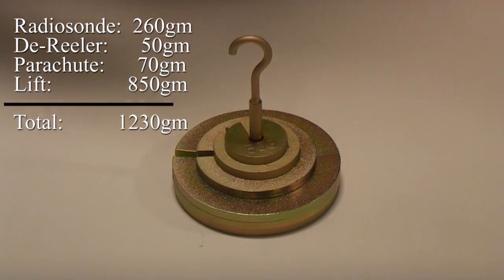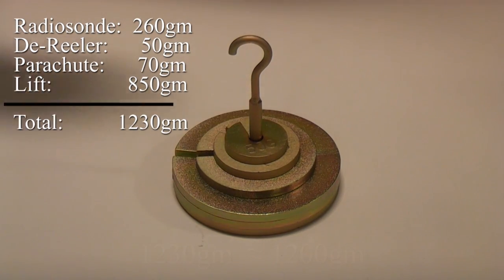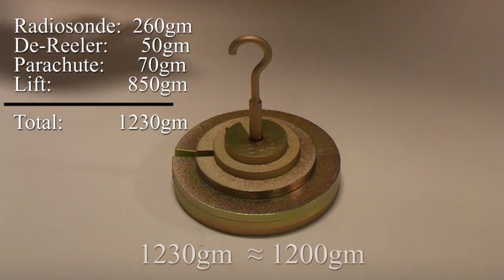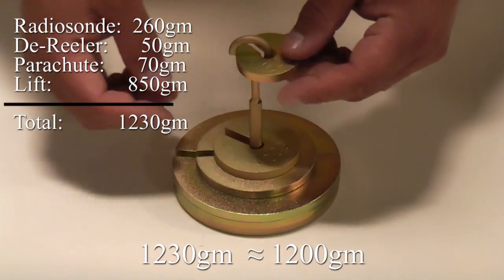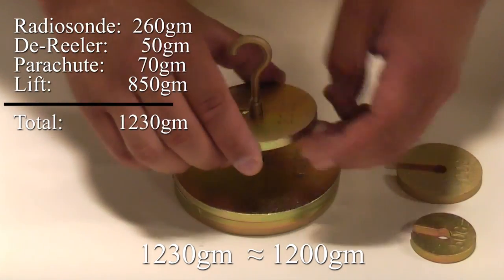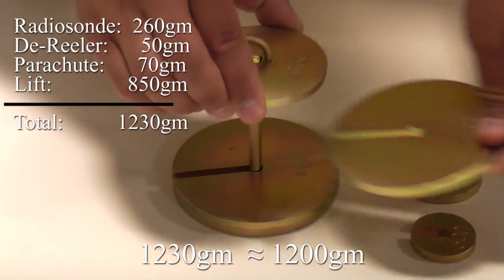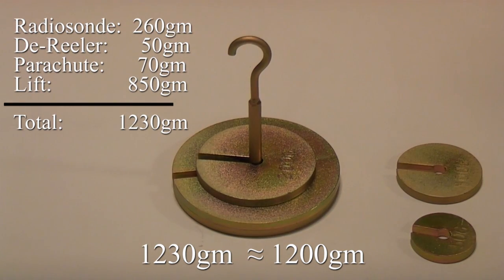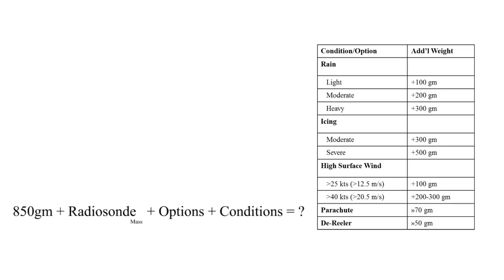So I could use either 1,200 grams or 1,250 grams. So I'm going to use 1,200 grams. I'm going to remove the extra weights, so I have 1,200 grams. My conditions outside are relatively clear and calm, so I am not going to add any additional weights.